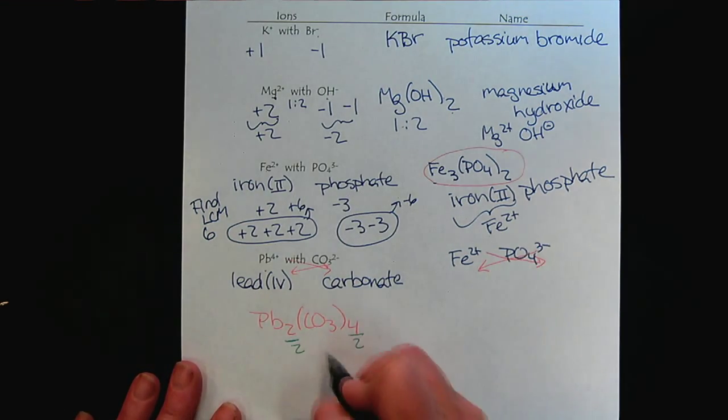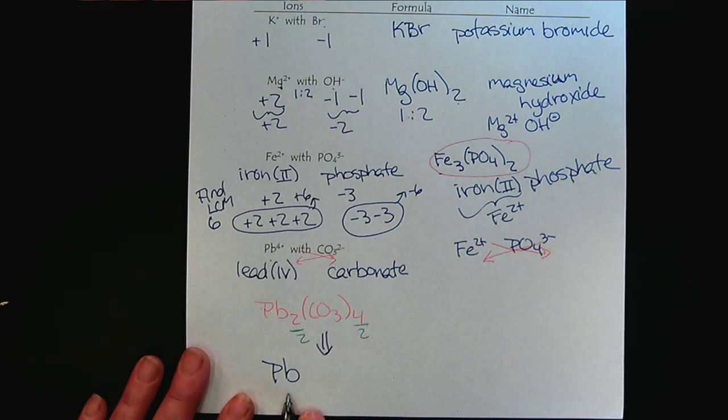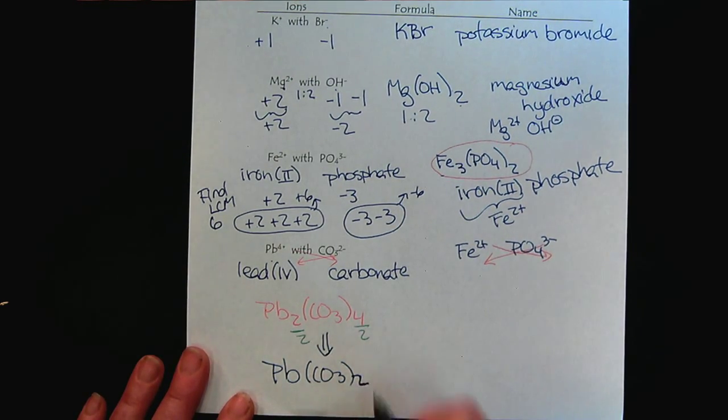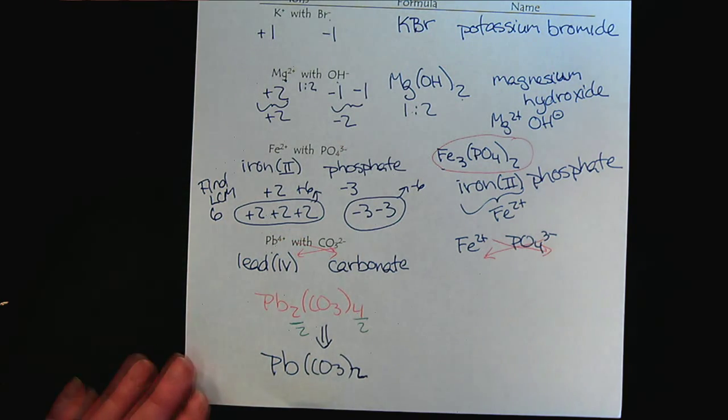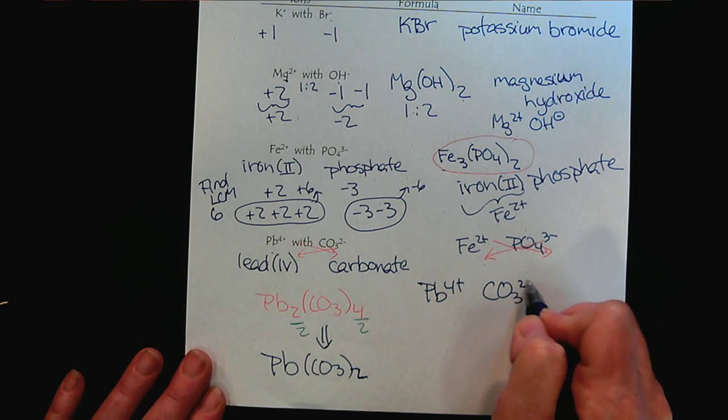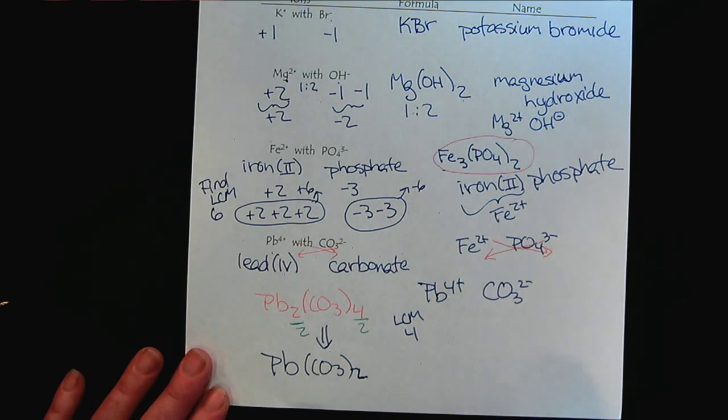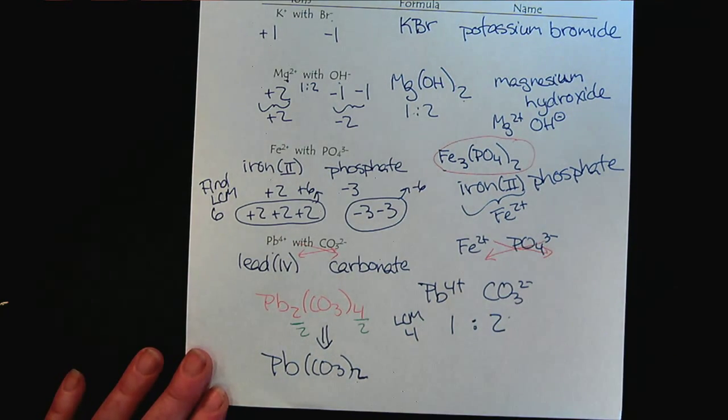And so, here we can see that there is a multiple of 2. So, we would want to reduce this to 1 lead 4 and 2 carbonates. So, if you decide to use the criss-cross method, make sure to look at your ratio for common factors that can be reduced. The other way to do it is to think about multiples.